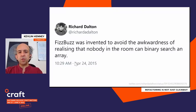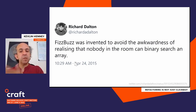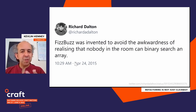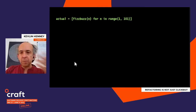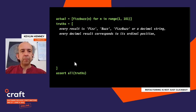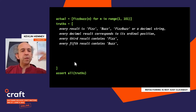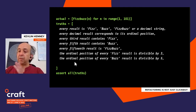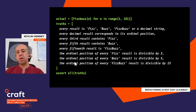And of course, if we're talking about refactorings and different solutions, let's talk about FizzBuzz — the counting game but also the coding kata. One, two, three — except not three. Everything divisible by three has a Fizz. One, two, Fizz, four, Buzz. Everything divisible by five becomes Buzz. But when we get to 15, anything divisible by both three and five is FizzBuzz. That should define our sequence. Normally FizzBuzz is evaluated from one to a hundred. And there are a number of truths we can state about it: every result is Fizz, Buzz, FizzBuzz, or a decimal string; every decimal result corresponds to its ordinal position; every third result contains Fizz; every fifth result contains Buzz; every 15th result is FizzBuzz; the ordinal position of every Fizz result is divisible by three; every Buzz result divisible by five; every FizzBuzz result divisible by 15. These are eight properties — property-based testing in a constrained context.